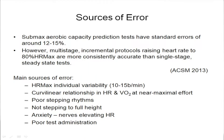What are the sources of error? Any sub-max aerobic capacity prediction test, particularly when heart rates are being used and measured, has standard errors of about 12 to 15%. However, multi-stage tests — rather than single-stage tests — using incremental protocols that raise the heart rate every 2-3 minutes up to 80% of heart rate max are much more consistently accurate than single-stage steady-state tests. The main source of error is that heart rate max 220 minus age has a wide variability of at least 10 to 15 beats per minute, if not more.